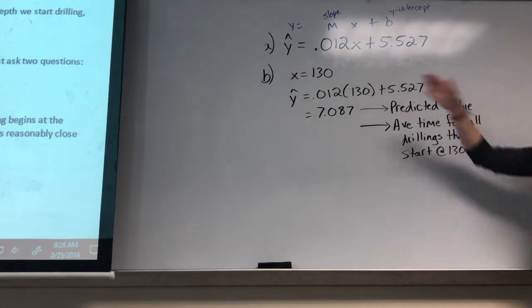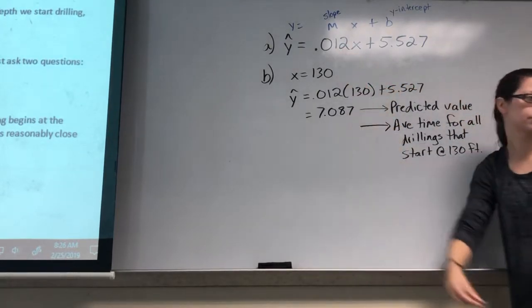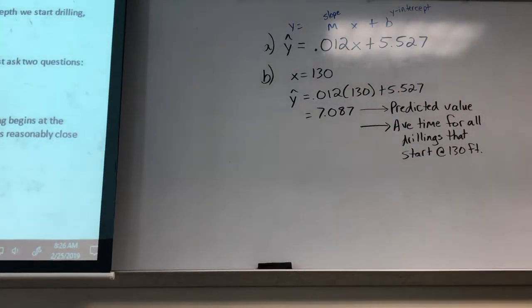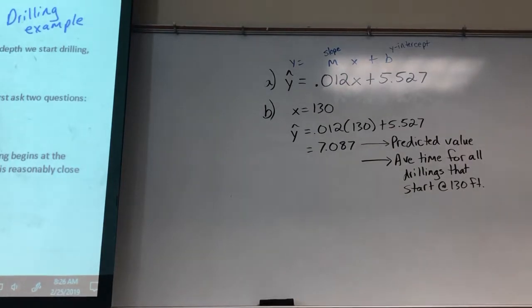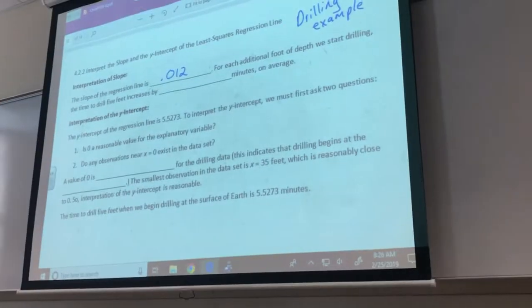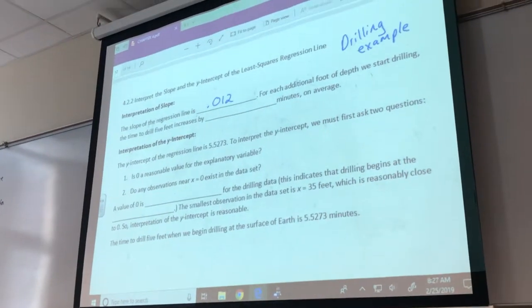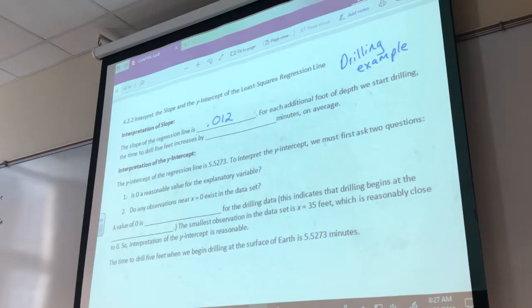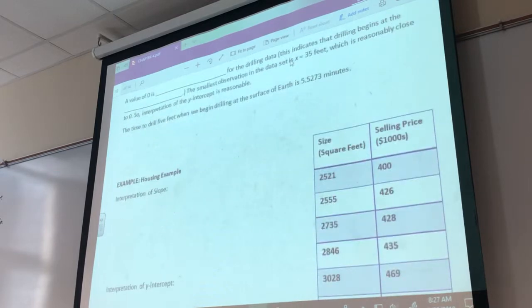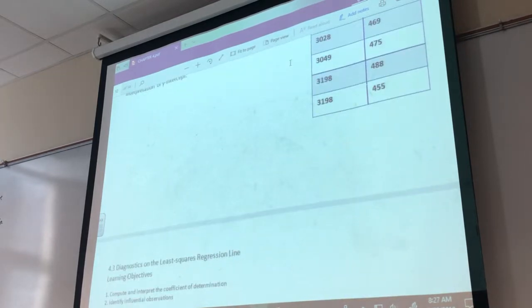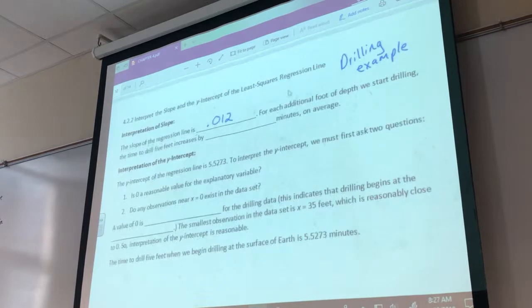So our slope is the one that comes in front of the x, that's the 0.012. So for us, the slope is going to be 0.012. That's the number that comes in front of your x.